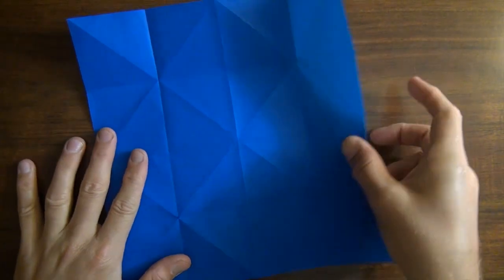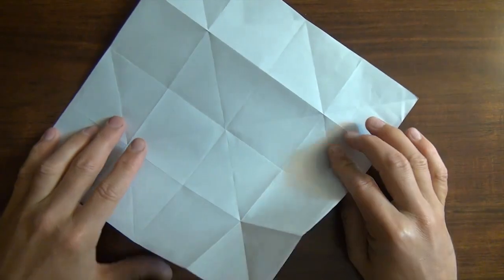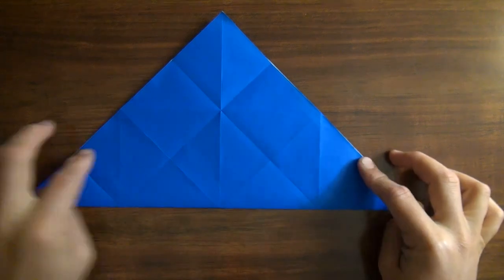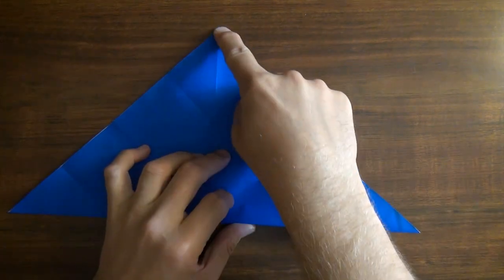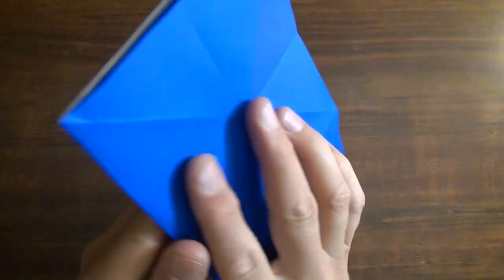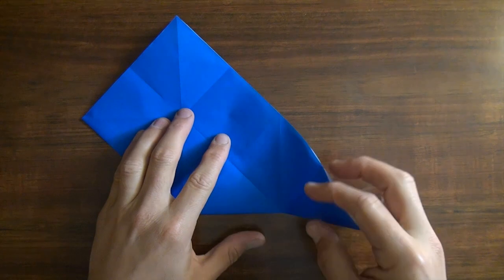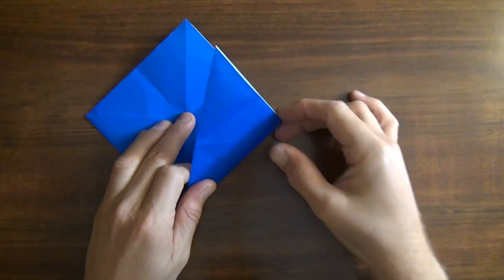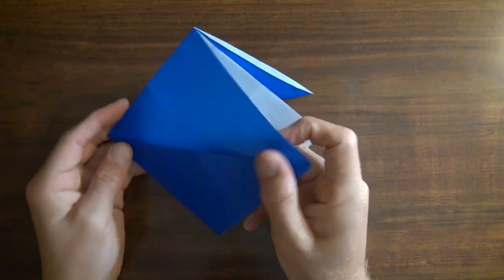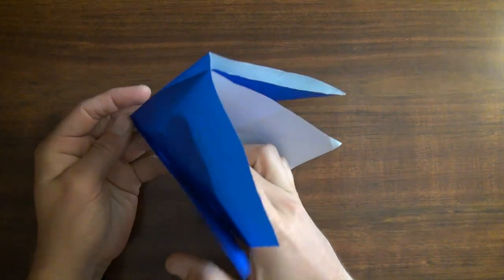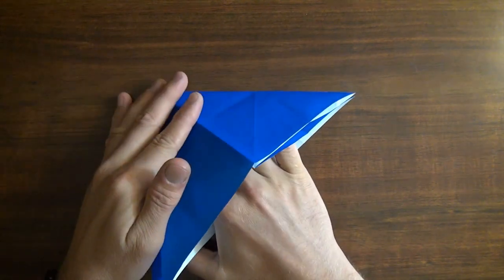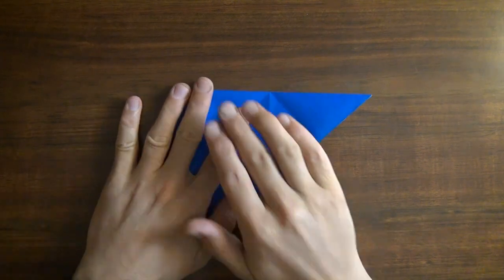And unfold and rotate and again let's fold this edge to the middle. And unfold and rotate and one last time let's fold this edge to the middle. Okay, now unfold and let's turn over and rotate and let's fold diagonally in half like this. And now we're going to fold this point up to the top and turn over left to right and let's fold this point up to the top. Okay, now let's rotate and let's open up this big pocket right here and flatten it down like this. So it's a water bomb base.